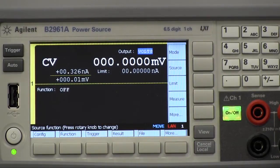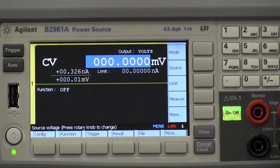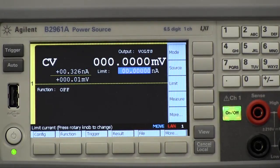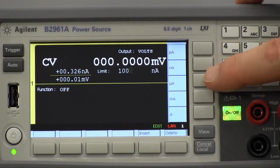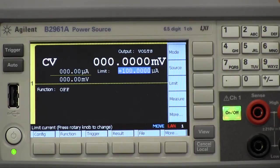Next, I need to set a limit for the current so that I don't risk damaging my device. Let's go ahead and enter 100 microamps as the current limit.